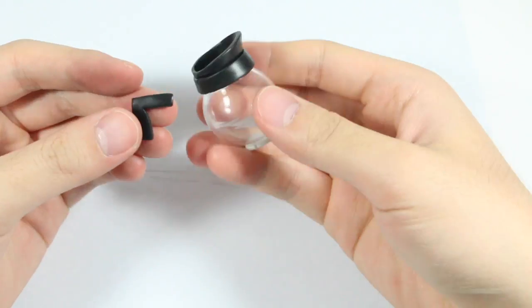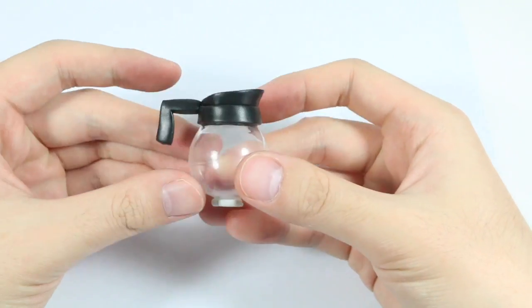Then for the handle you want to make an L shape and you want to attach that to your coffee pot rim.